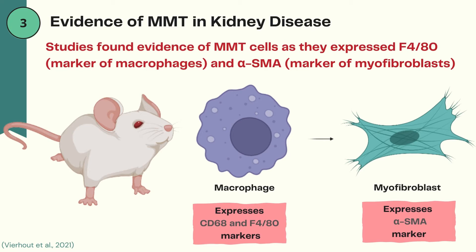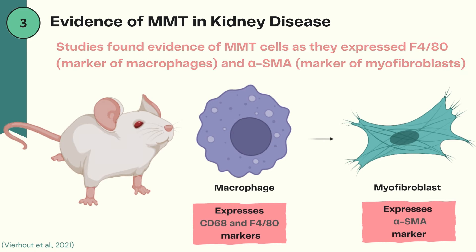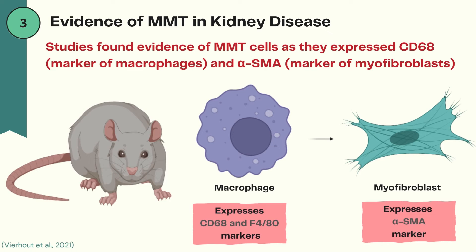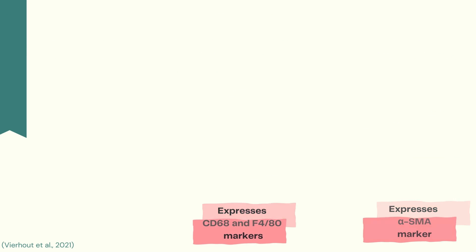In mice, studies induced kidney fibrosis and found the expression of F4/80, which is a marker of macrophages, as well as the expression of alpha-SMA, which indicates the presence of myofibroblasts. This suggests MMT is also present in mice with induced kidney fibrosis. In rats with induced diabetic kidney disease, evidence of cells undergoing MMT were also found, as cells were expressing both CD68 and alpha-SMA markers. This indicates that cells expressing characteristics of both macrophages and myofibroblasts were present in rats with diabetic kidney disease.